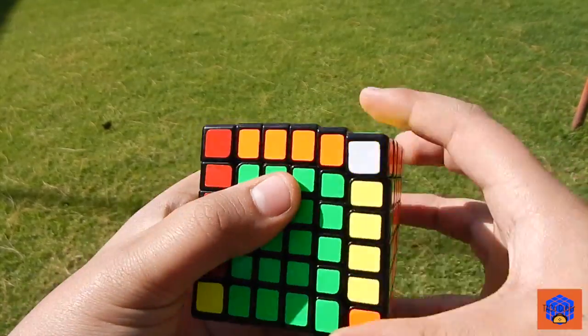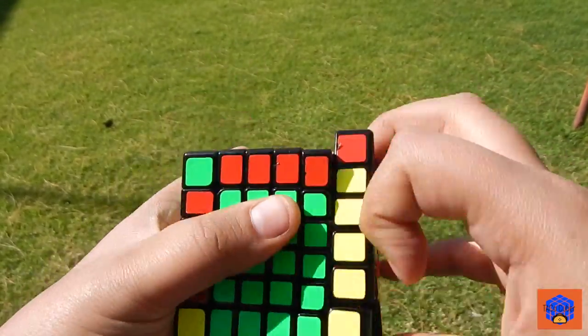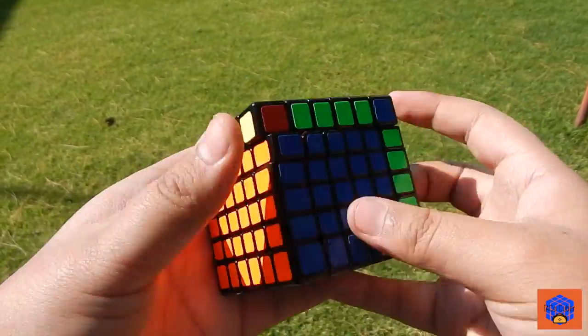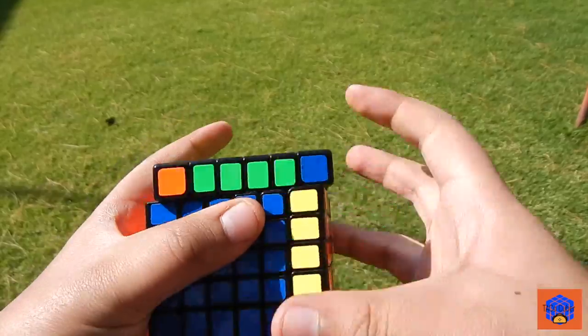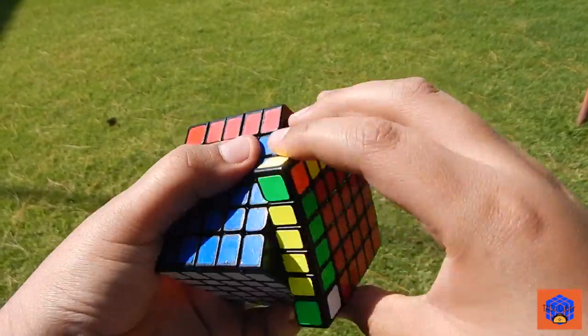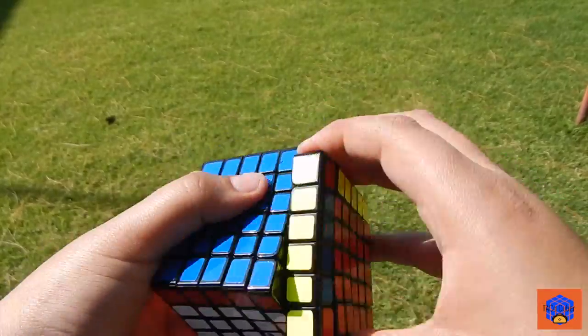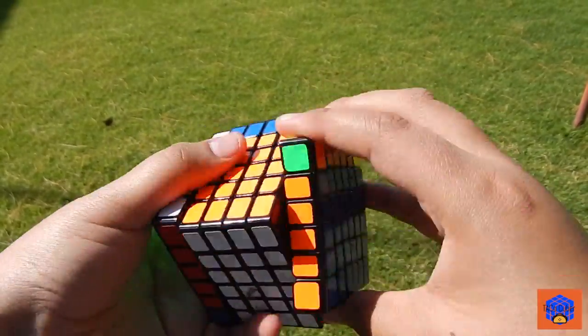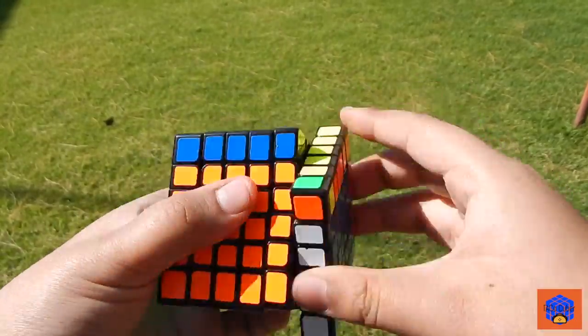But what makes this cube amazing is its combination of speed and stability. When I unboxed this cube, it was kind of slow and very tight, but after moving it and adjusting tensions, it is simply amazing, especially in the 3x3 stage. The other layers are smooth, fast and stable, making it a perfect 6x6.